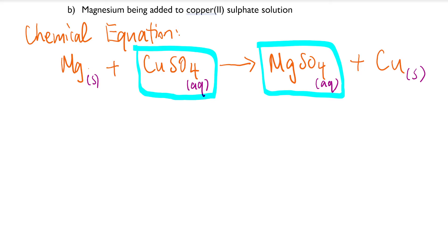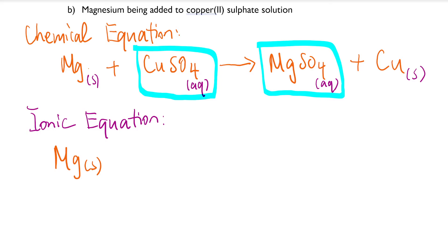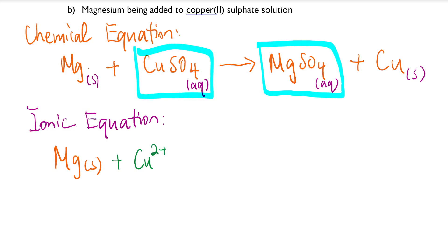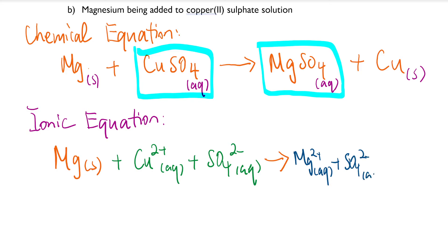Grab your seatbelts and let's work through this ionic equation. Mg is going to remain the same — nothing is going to happen to it. But for CuSO₄ (aq), I need to show the charges. There's no coefficient in front, so: Cu²⁺ (aq) plus SO₄²⁻ (aq). And on the product side: Mg²⁺ (aq), SO₄²⁻ (aq), and copper metal (s).